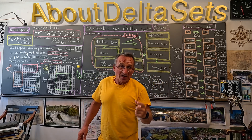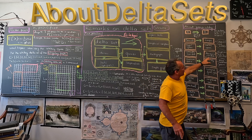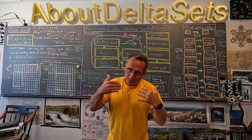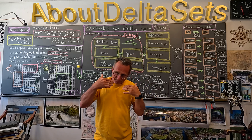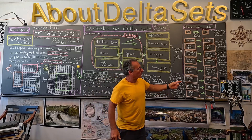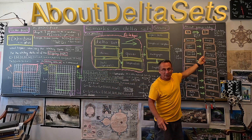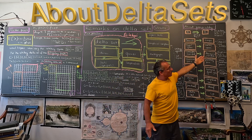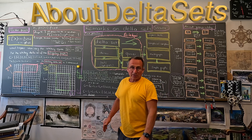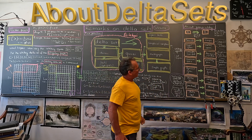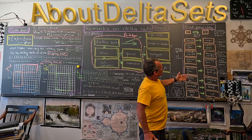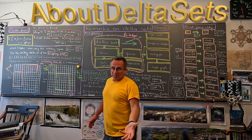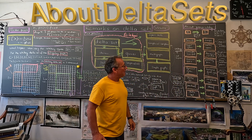Riemannian manifolds are less general because the morphisms are more constrained. Diffeomorphisms in general are not morphisms for Riemannian manifolds. Isomorphisms here are diffeomorphisms which also preserve the metric.